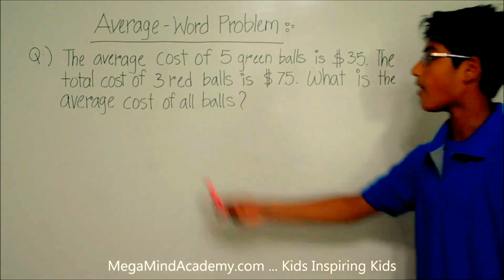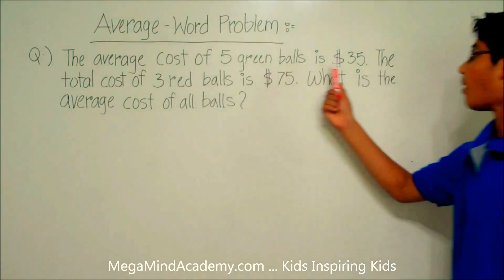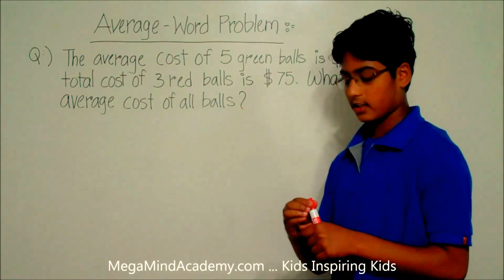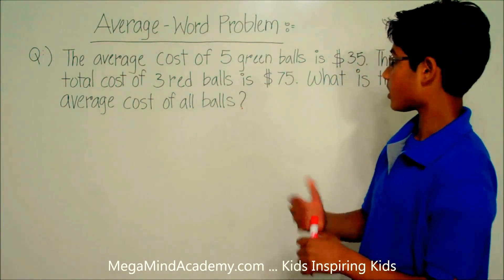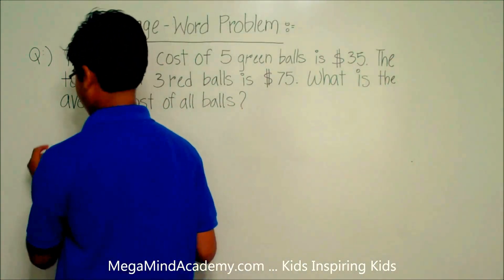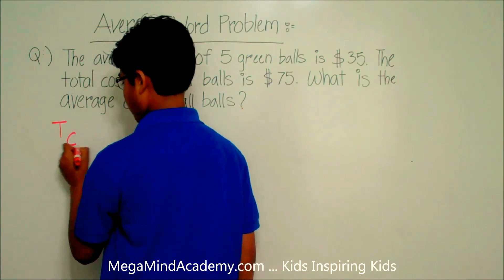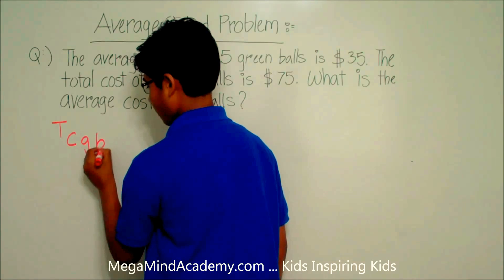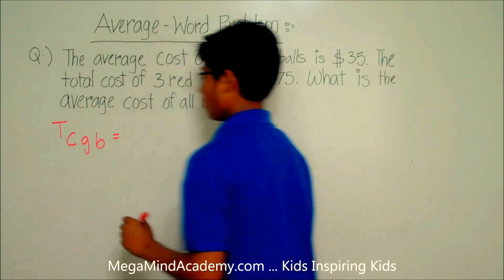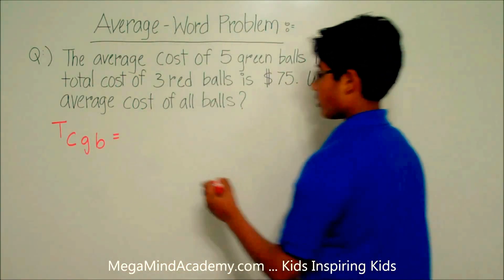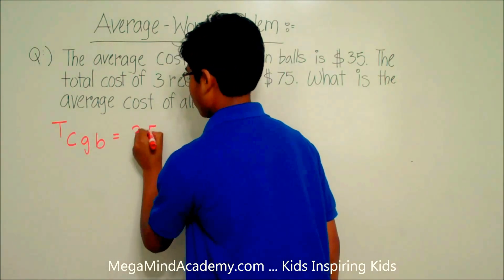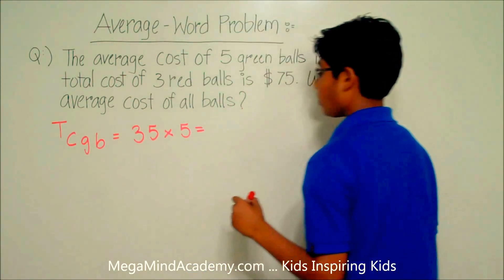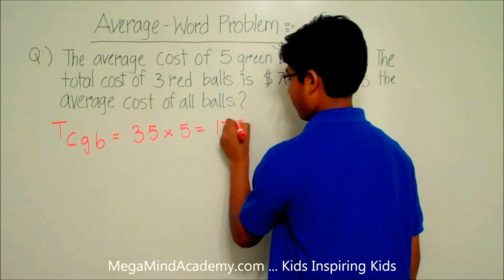The problem states that the average cost of five green balls is $35. So let's find the total cost for five green balls. The total cost for the green balls — TCGB — is equal to $35 times five balls, which is equal to $175.